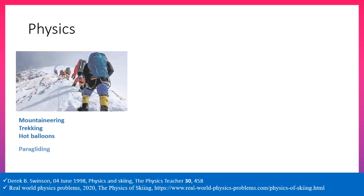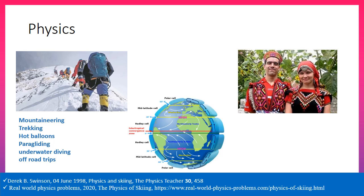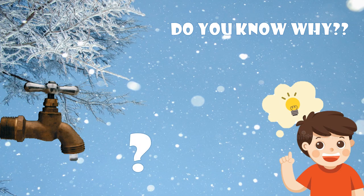Similar to skiing, you can also find the physics behind skating, mountaineering, hot air balloons, paragliding, underwater diving, off-road trips and so on. The clothing of people is related to the climate at that place — you can find the relation between climatic conditions and clothing. Climate of a place is related to wind flow, temperature, altitude, etc., and a comparative study of climate is also a potential project. Another scenario: in states like Himachal, during very heavy winter, the pipes are not closed completely — they are allowed to drip continuously. Find out why and comment your answer below.